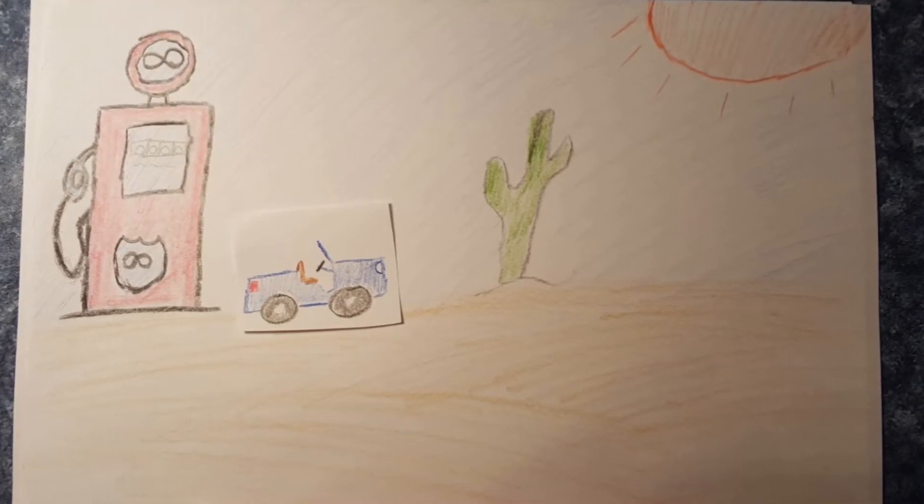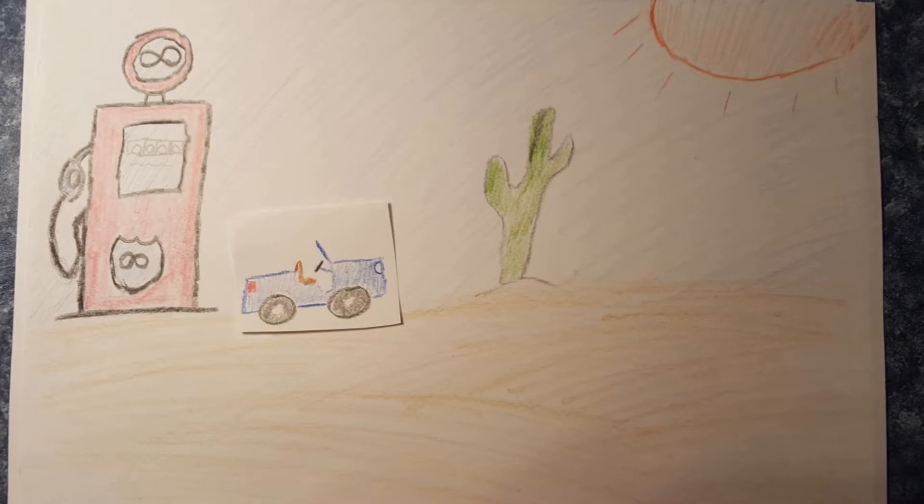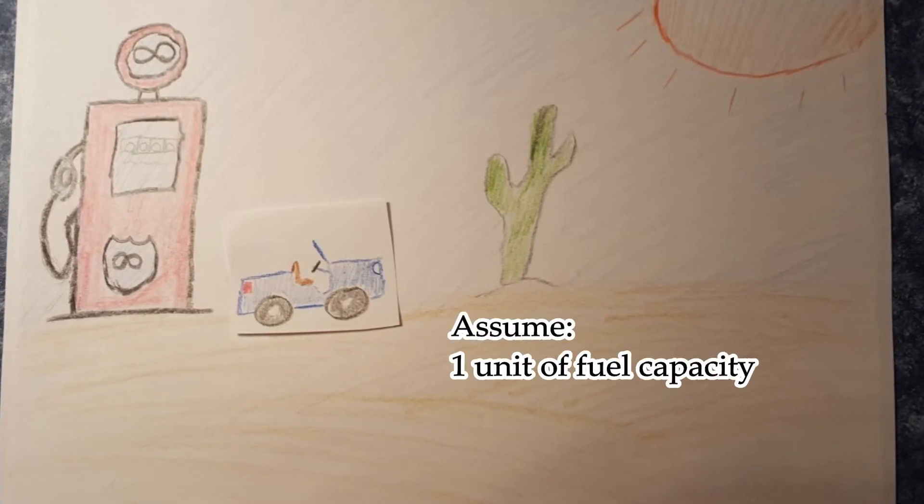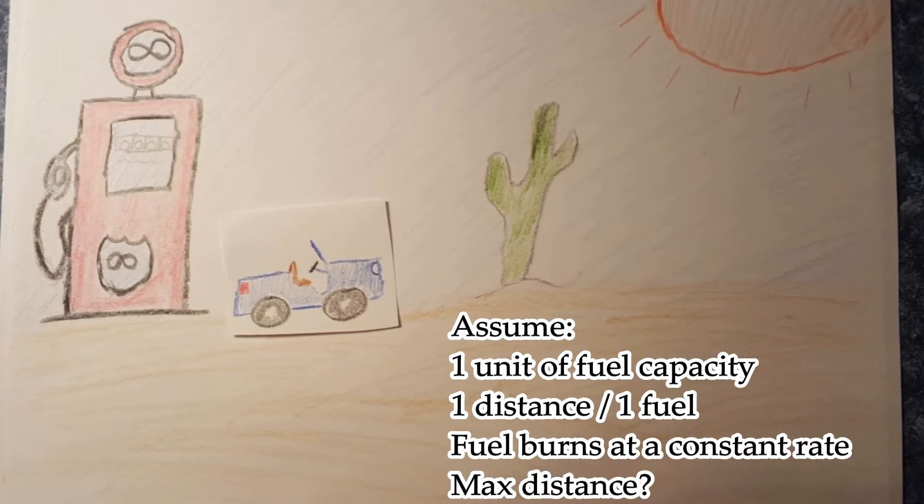Suppose you find yourself on the edge of a vast desert with an impossibly reliable Jeep and an infinite source of fuel. But the Jeep can only hold one unit of fuel, and with that fuel it can go exactly one unit of distance.